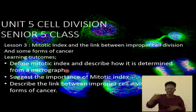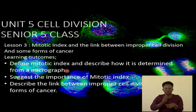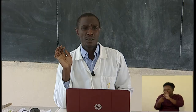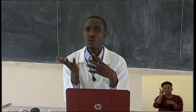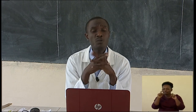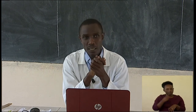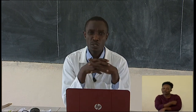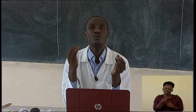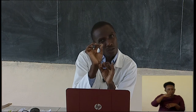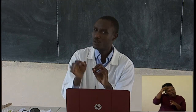Every time we go to hospitals and they show us images of cells, especially when there is suspicion of cancer, what type of tissues do they show you in the pictures? Do you ever try to look at those images? Can you find some anomalies, possibly with what you have learned before? It's not the first time you're seeing images of cells dividing.